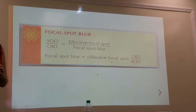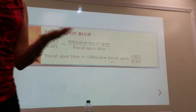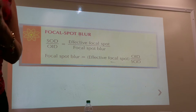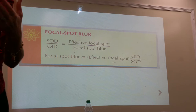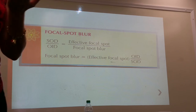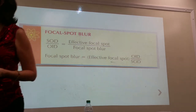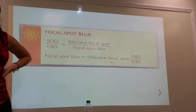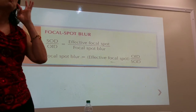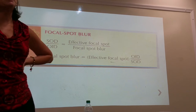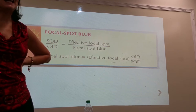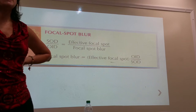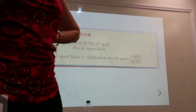The effective focal spot is the one that interacts with the image receptor. The actual focal spot is on the anode. So we're talking about how the actual focal spot appears on the image receptor. If I have a one-millimeter actual focal spot size, the effective focal spot will be less — not the same. We'll talk about that in a moment.